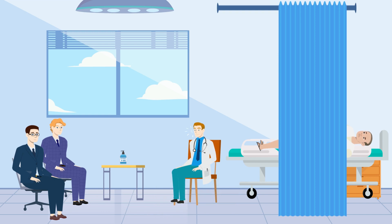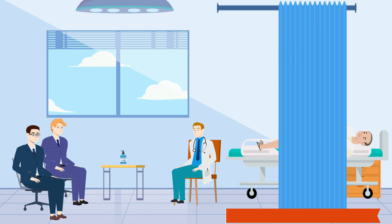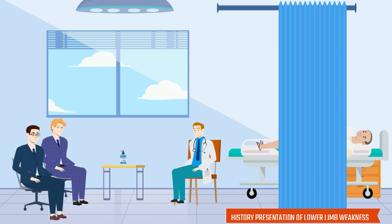Muhammad Amir is a 42-year-old businessman and resident of Lahore. He presented with weakness in both lower limbs for 12 days. Initially this weakness started in both feet, but within two days it progressed up to the thighs.